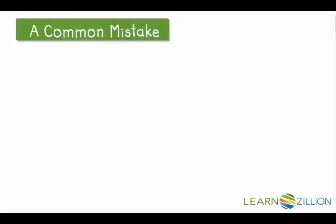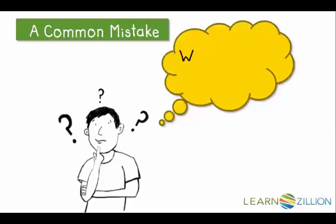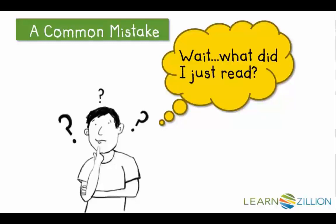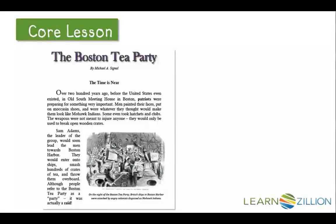A common mistake that readers make is that they start reading and they don't stop to ask themselves, what is this part of the text really about? When you don't know what something is about, this causes readers to not understand. When we're looking at an important text, readers don't pay attention to the first sentence of the paragraph. Authors leave really big clues in the first and last sentences to help the reader get a general picture of what they're trying to share within each paragraph.